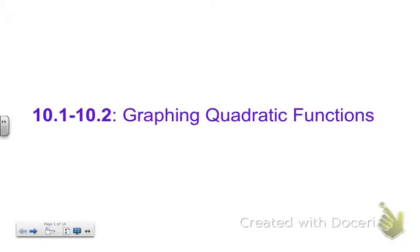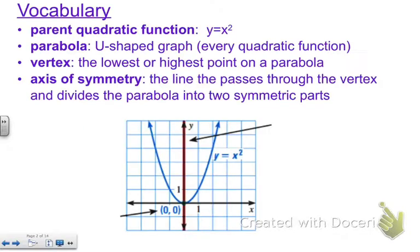This is the first section of chapter 10 and we are graphing quadratic functions. So we have lots of new vocabulary in this section. The first thing we have is the parent quadratic function, which is just the function y equals x squared. So that's the very basic quadratic function that we talk about when we think of a quadratic function. And that's what we're going to compare everything else to. So quadratic functions are all parabolas, which is the u-shaped graph, looks like this.